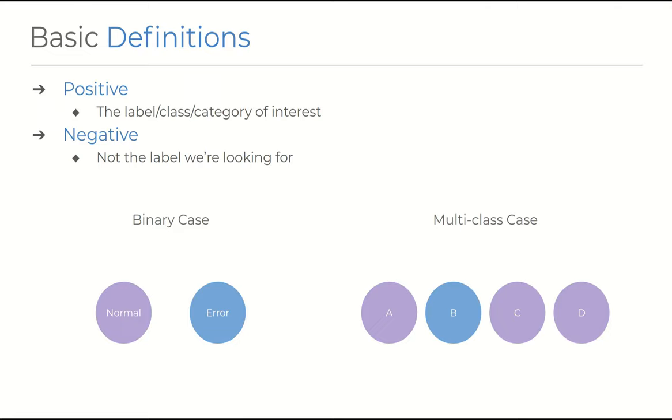But before we can get started with the metrics, we have to go over some very basic definitions of the categories that we can group the output into. So say we have a system that makes a prediction about the class of an object. We say that a positive case is when the label or category is the one we're interested in. For example, say that we're looking at detecting errors in a data set. If we're interested in measuring the performance of identifying the error case, we would class that as the positive case, and normal operation as negative, which is straightforward.